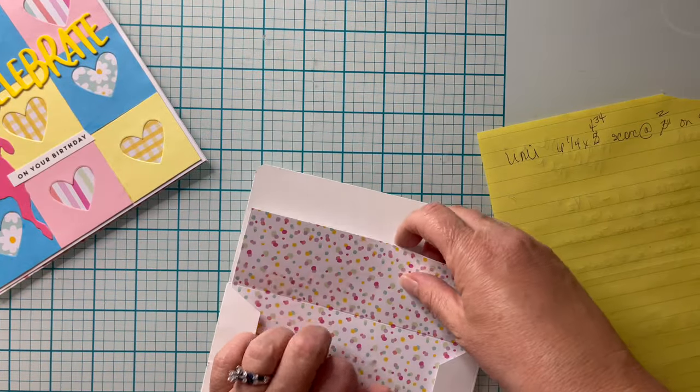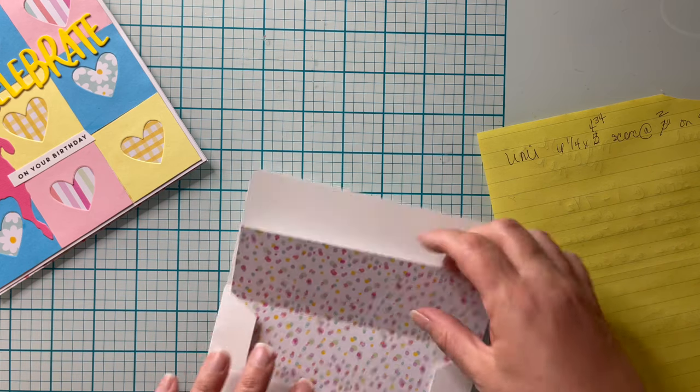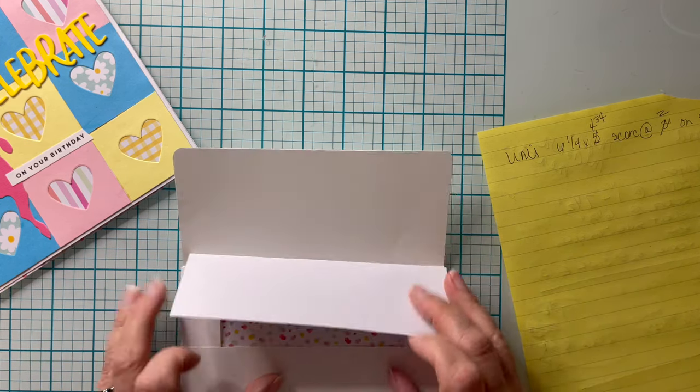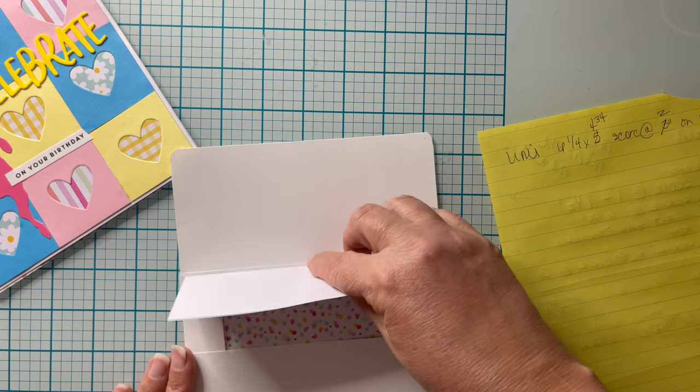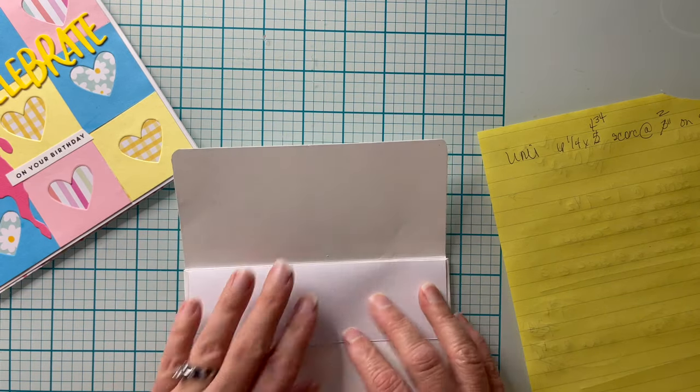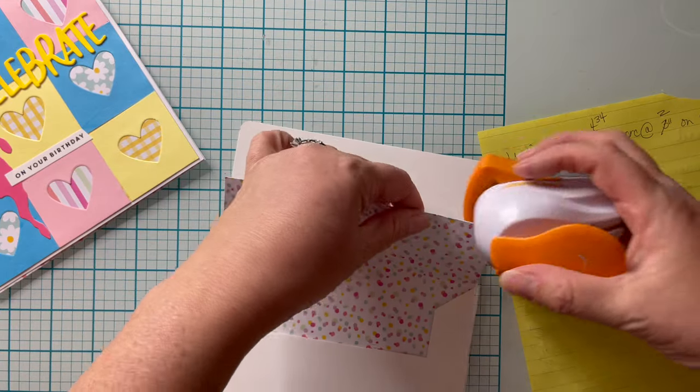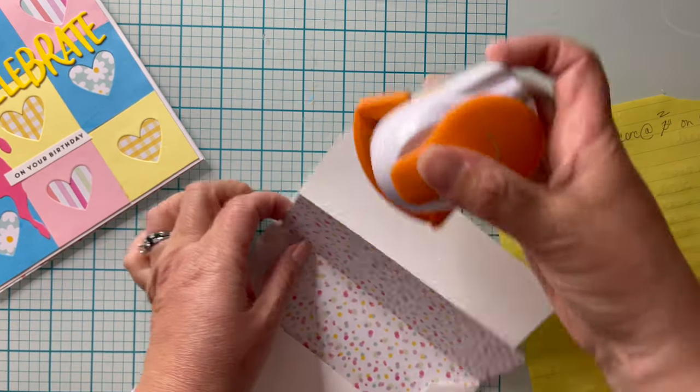With the liner we're going to put the wider side into the card base at this point and then we're going to line up our score lines. So we're going to line up the score line with exactly the spot where the card folds and in this case I forgot the corner chomper.